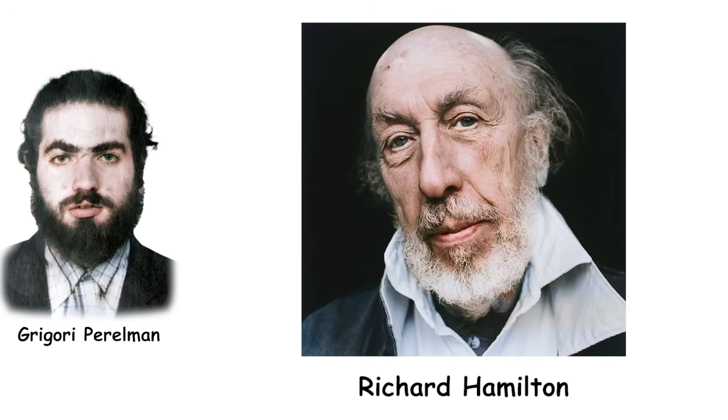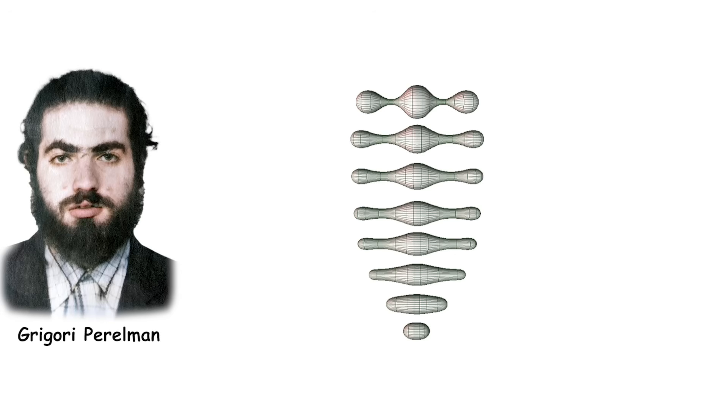Even though Perelman's proof wasn't perfect, it was still a huge deal. He had finally solved the Poincaré Conjecture, which had been a mystery for a very long time. He proved it using the Ricci flow method developed by Richard Hamilton, and Hamilton laid the foundations for using Ricci flow to attack the Poincaré Conjecture.